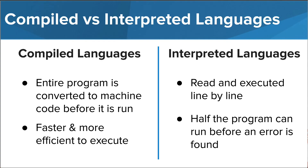One pro of a compiled program is that after being compiled, any time the program is run in the future, it uses this already translated version, which allows programs to be faster and more efficient to execute than interpreted languages. For interpreted languages, because they are executed line by line, some lines of code can be run before an error is found. This is why you will notice that as you run a Python program, you may see a few commands run perfectly before the computer finds an error and stops in the middle of the program. This can only happen with interpreted languages.